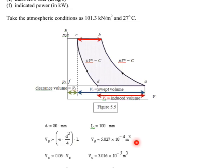For beginners, it's safer to work in meters. We get the swept volume Vs = 5.027 × 10⁻⁴ m³. We also get the clearance volume which is 6% of the swept volume: Vc = 0.06 Vs.